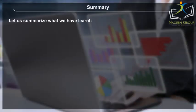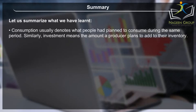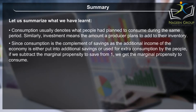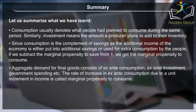Summary: Consumption usually denotes what people had planned to consume during the same period. Similarly, investment means the amount a producer plans to add to their inventory. Since consumption is the complement of savings, the additional income of the economy is either put into additional savings or used for extra consumption. If we subtract the marginal propensity to save from one, we get the marginal propensity to consume. Aggregate demand for final goods consists of ex-ante consumption, ex-ante investment, government spending, etc. The rate of increase in ex-ante consumption due to a unit increment in income is called marginal propensity to consume.